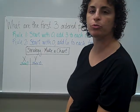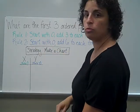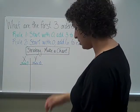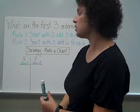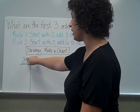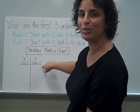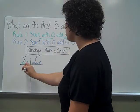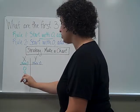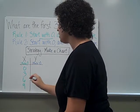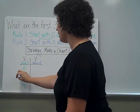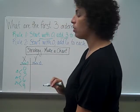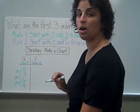This time we're being asked: what are the first three ordered pairs? I have two different rules here. Rule 1: start with 0 and add 3 to each term. Rule 2: start with 0 and add 6 to each term. My strategy is to make a chart, turning Rule 1 into my x-coordinate and Rule 2 into my y-coordinate. Starting at 0 and adding 3: that would be 3, then 6, then 9. I added 3 to build my first coordinates for x.